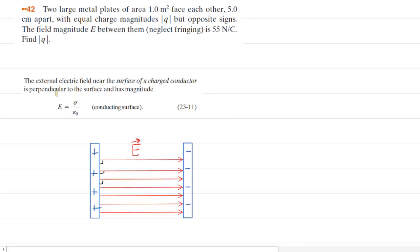One of the key results derived from Gauss's law is that the external electric field near the surface of a charged conductor is perpendicular to the surface and has the magnitude given by this equation right here.